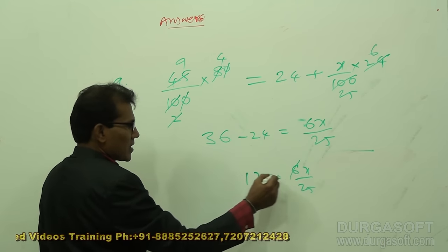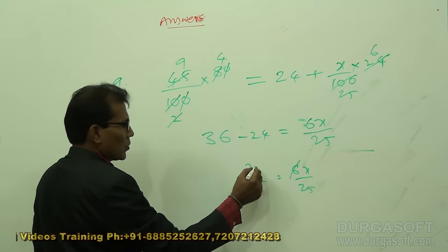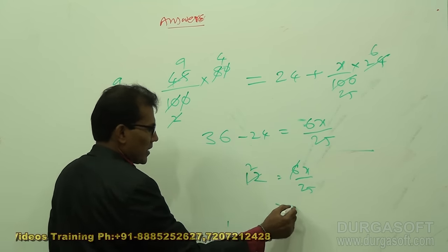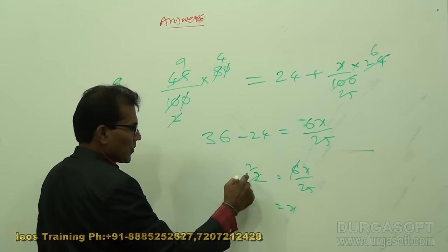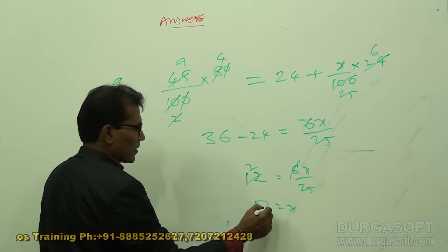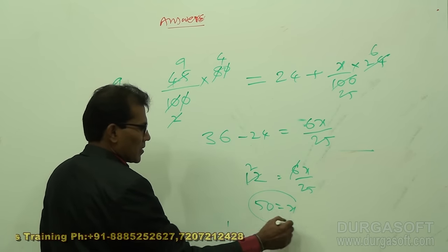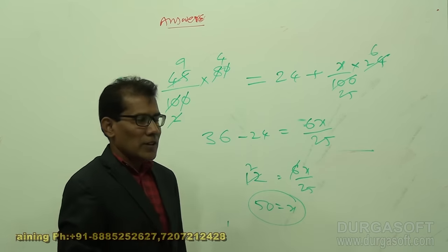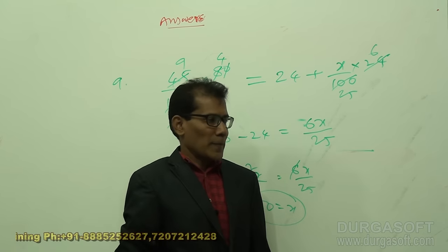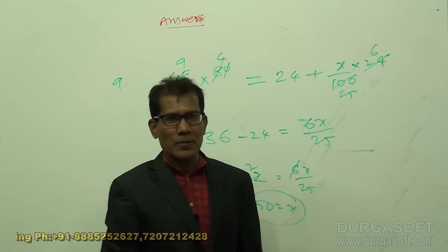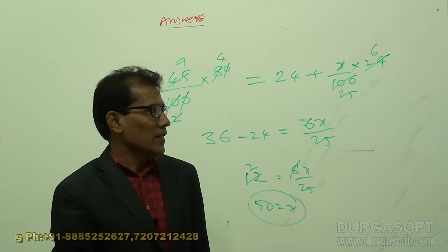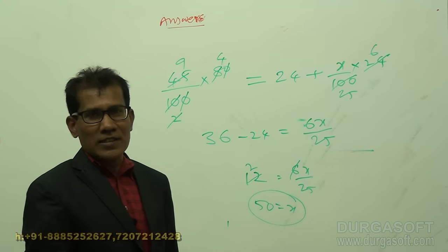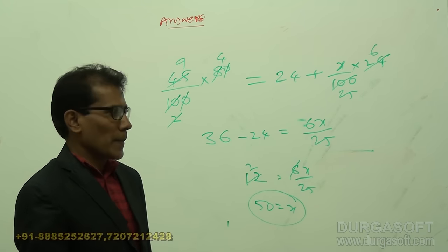So x equals 25 times 2 equals 50. That is the value of x for question number 9. This is how we use the keywords to solve percentage problems.